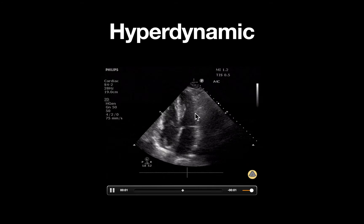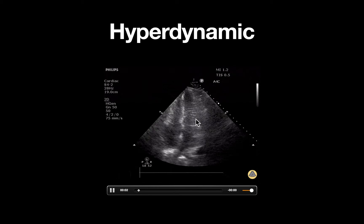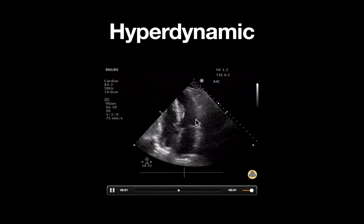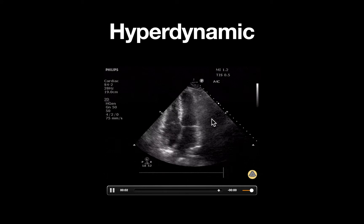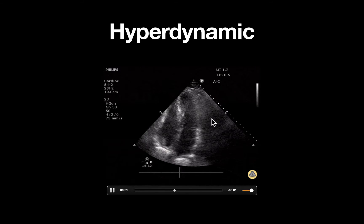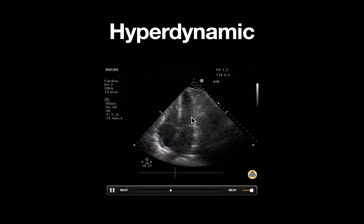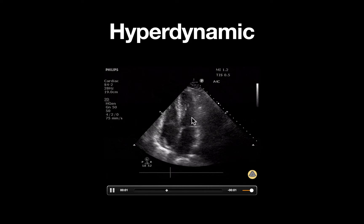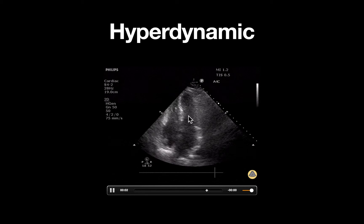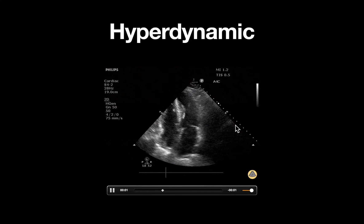Notice that in this clip the endocardial excursion and thickening of the left ventricle is increased, in this case leading to near obliteration of the left ventricle cavity during end systole.